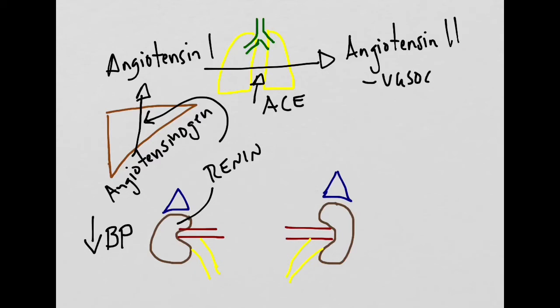Angiotensin-2 has an effect on the arterioles and is able to cause vasoconstriction. This in itself increases the blood pressure. However, angiotensin-2 also goes to the adrenal cortex to stimulate the release of more aldosterone.